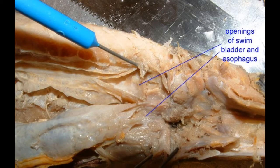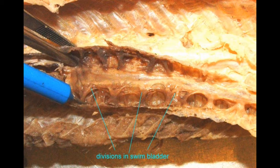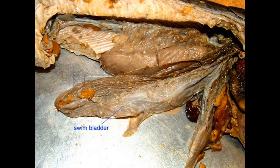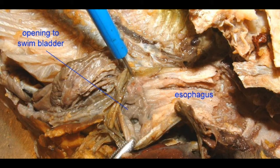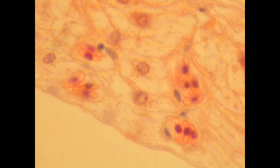Note that it empties into the esophagus the same way that amphibian lungs do, and note that, like lungs, it has internal subdivisions. The same can be said of this bowfin, where the swim bladder stretches the length of the abdominal cavity, empties into the esophagus, and is internally subdivided. Note in these microscopic images of a swim bladder cross-section that the blood capillaries bring blood very close to the air in the lumen of the swim bladder.